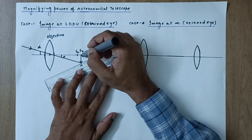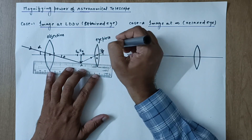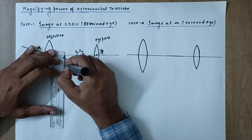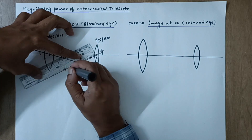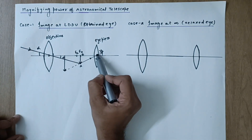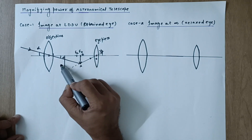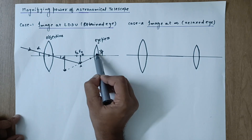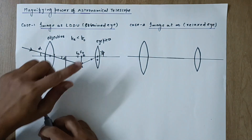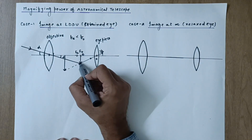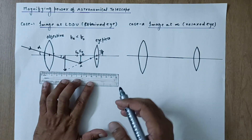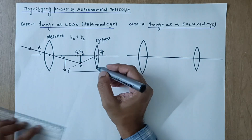Since the object lies between O and fe of the eyepiece, the rays diverge after passing through the eyepiece. When extended backwards, they form the final image at D — the least distance of distinct vision. For the eyepiece, the object is AB and the final image is virtual and erect on the same side as the object, because the object lies between O and fe. The eyepiece has a focal length smaller than that of the objective.